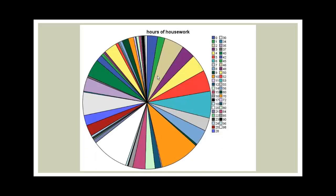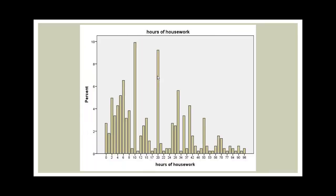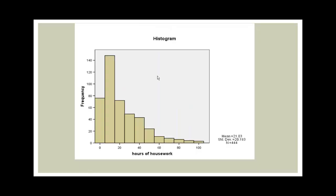The pie chart is really pretty but doesn't tell us a thing. And if we look at the bar chart for hours of housework, it really doesn't give us a nice clear picture of what the distribution looks like. But if we look at the histogram for hours of housework, there we can see very clearly what the distribution looks like. So the histogram here would be a much better graph than the bar chart.